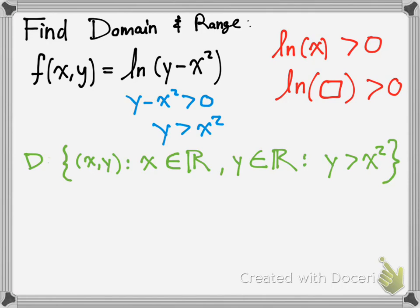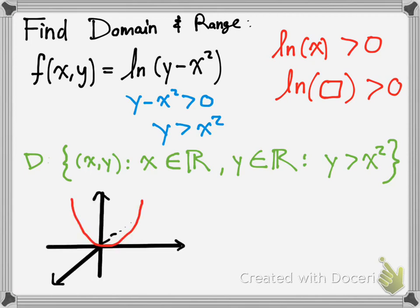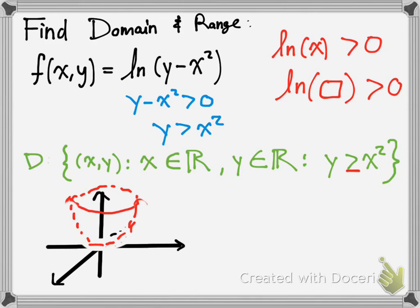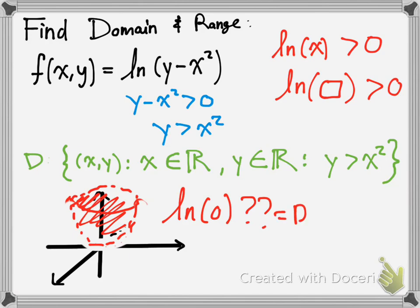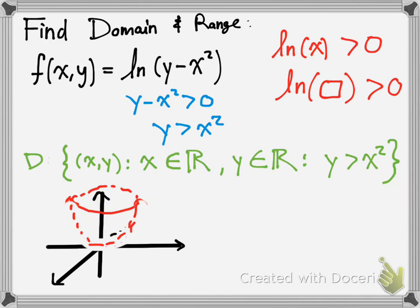Quick question: what do you think the domain would look like? Since you have this parabolic function — if it was y equals x squared, it would look a little something like this. And since we're three-dimensional, I'm trying to make it look 3D here. Big error here — that should be a dotted line, because it's not greater than or equal to, so the boundary is not included in the domain. Then it would be everything on the inside that is included in the domain. You could test by noting that ln of zero does not exist.